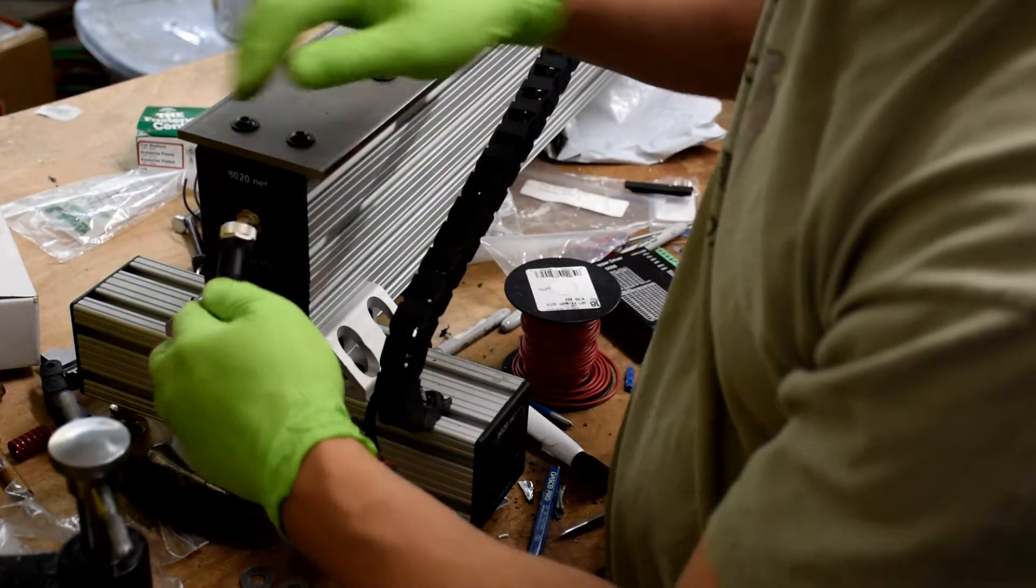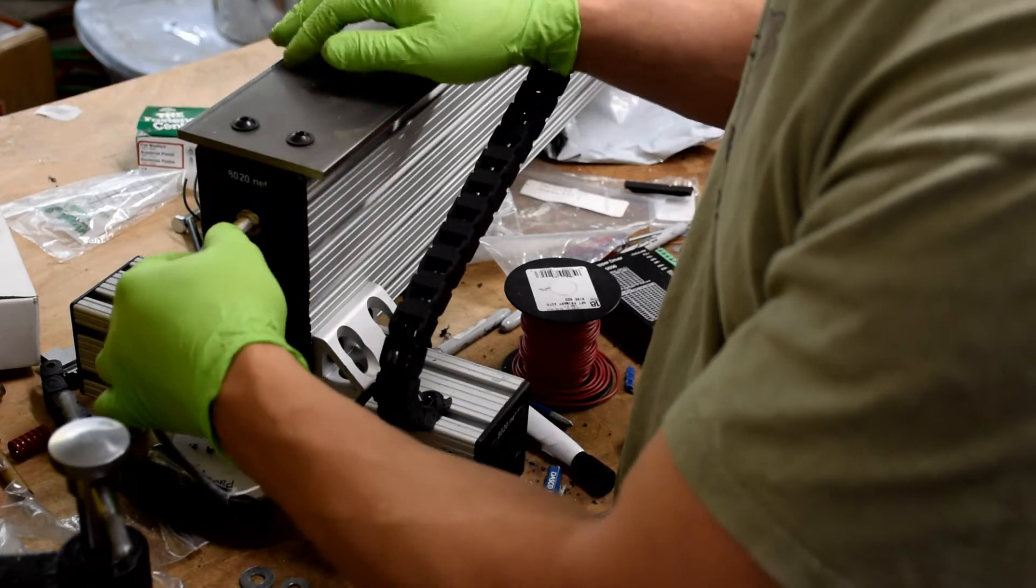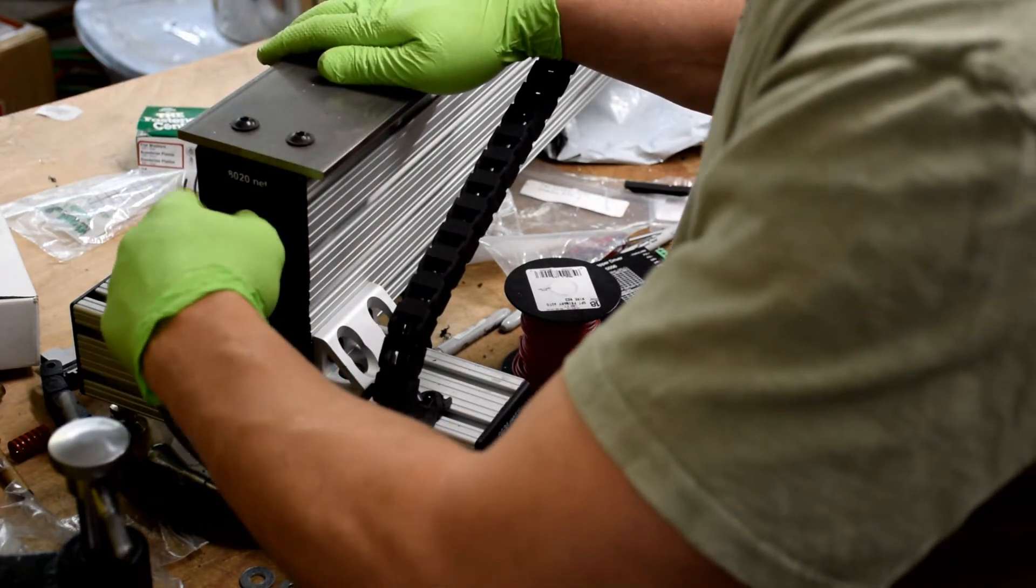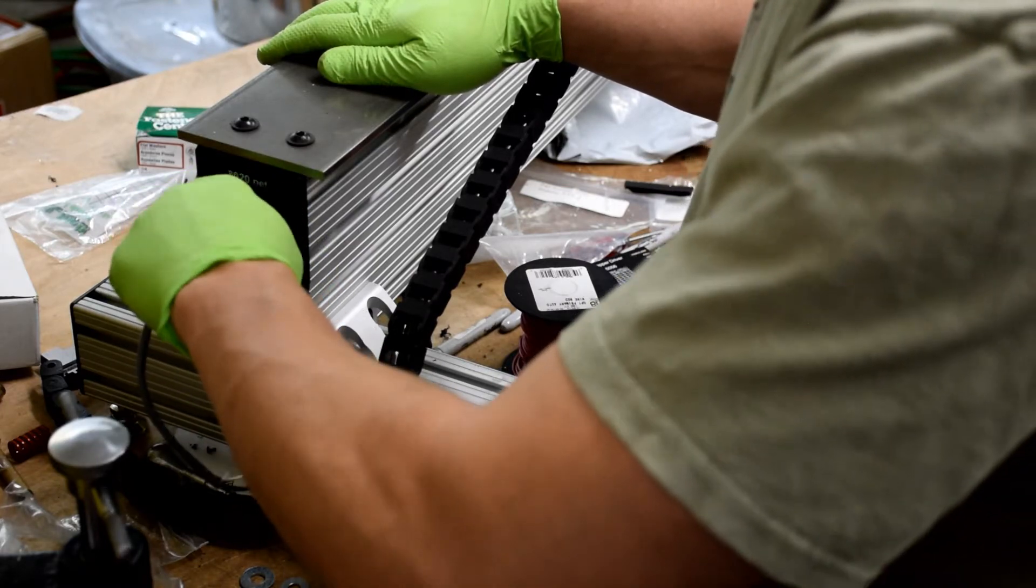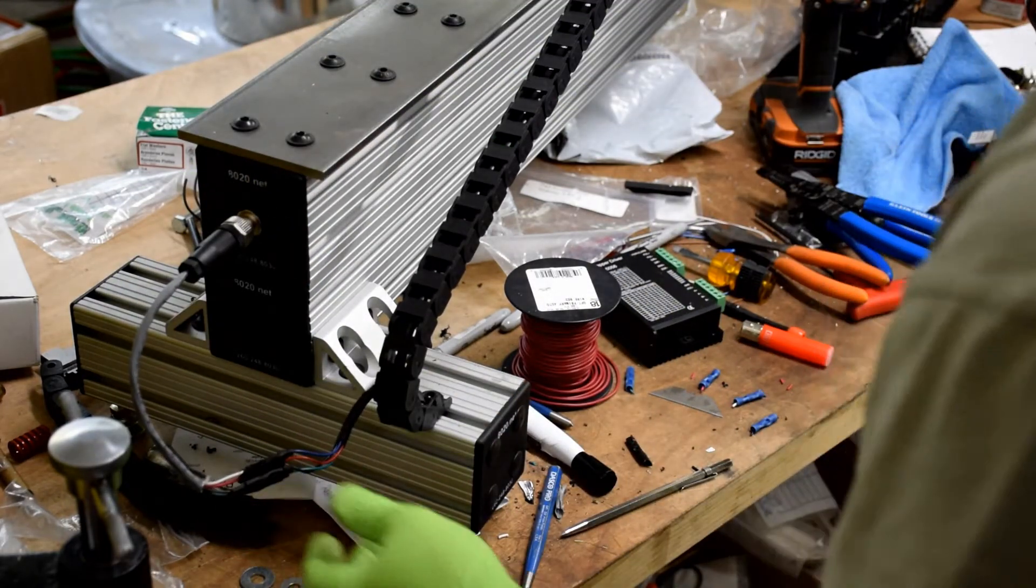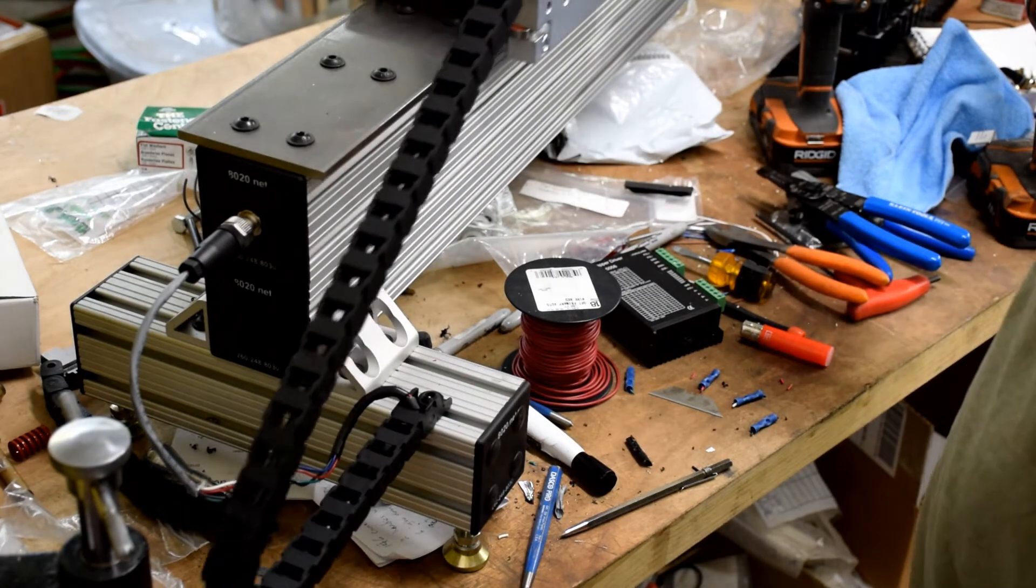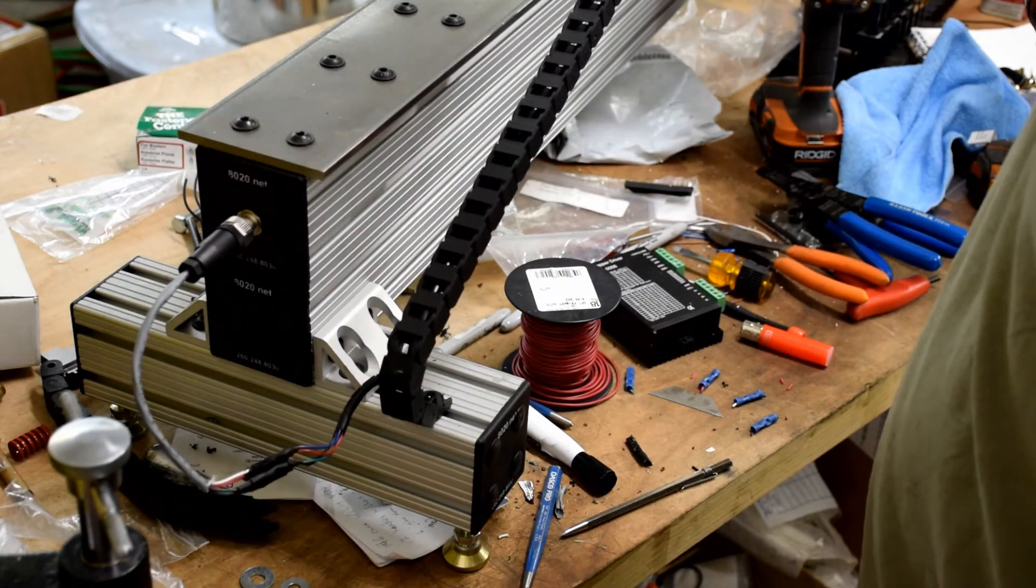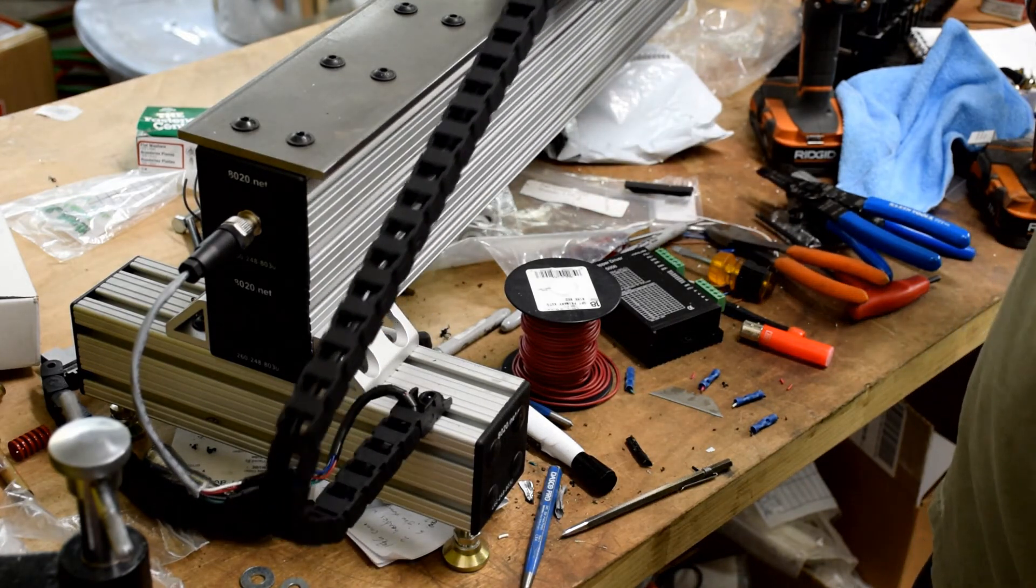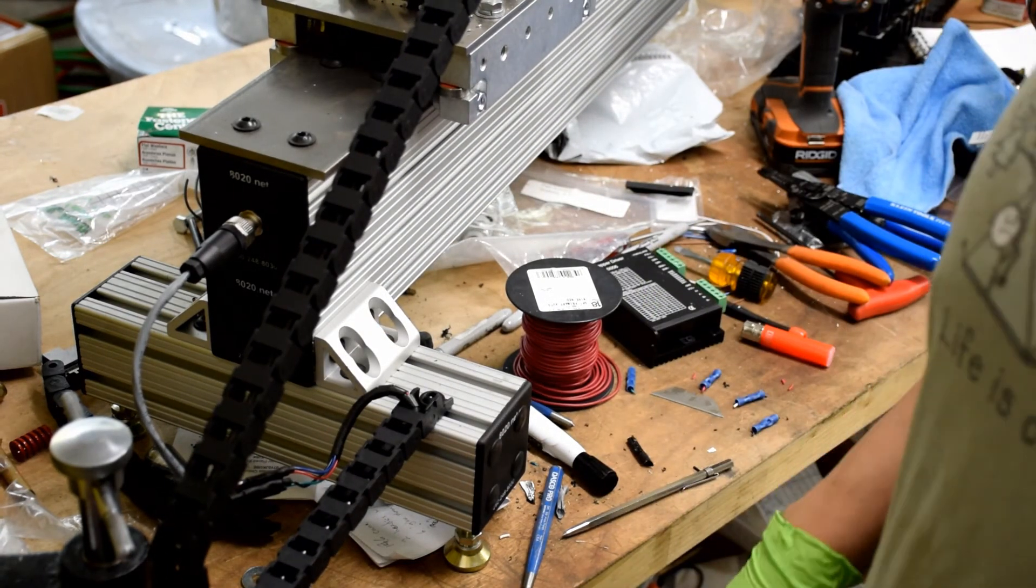And to finish up this video, we're just going to screw that connector in. And you can see the tailstock rolls back and forth, the cable chain carries the wire nice and easy, no kinks, nothing getting bound up, really clean. Thanks for watching.